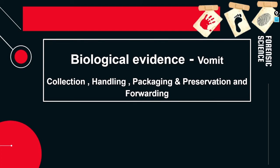Before we begin, what is vomit? Vomit is basically the food material which has been sent out of the body through the mouth. It is an involuntary action — there is no control on it. This involuntary action we also call scientifically emesis, that means throwing up or involuntary emptying of stomach content through the mouth. In simple terms, we call it emesis.